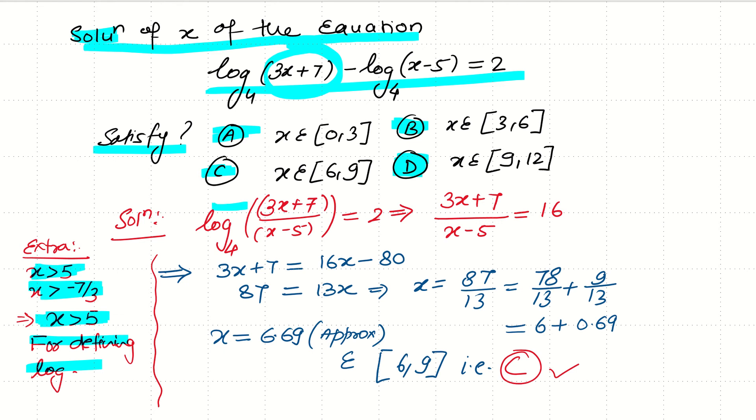By using log properties, we can write it as log of m by n to the base 1/4 is equal to 2. By changing it into exponential form, what we are getting is x is equal to 87 by 13.